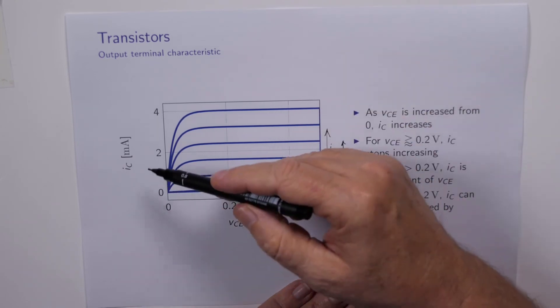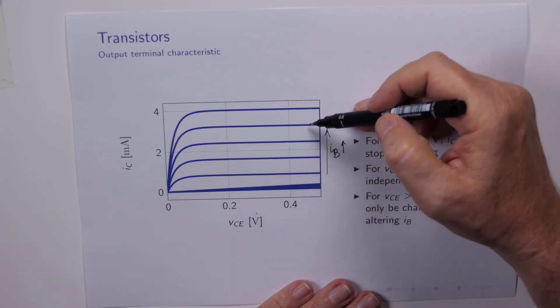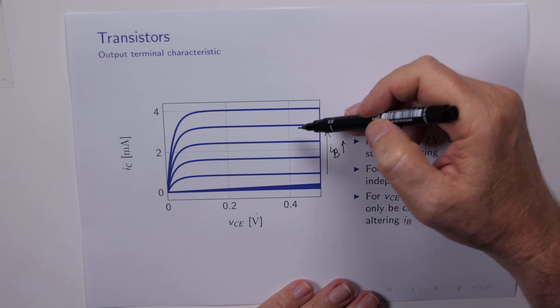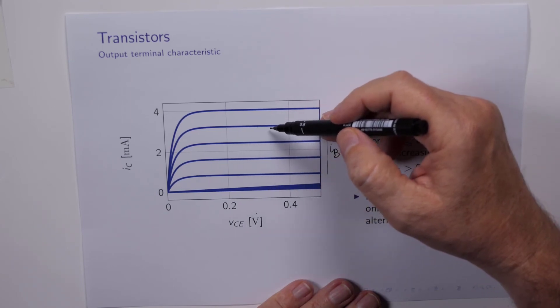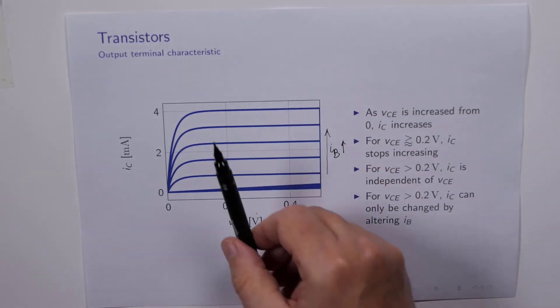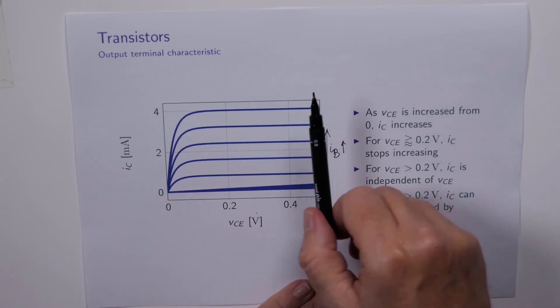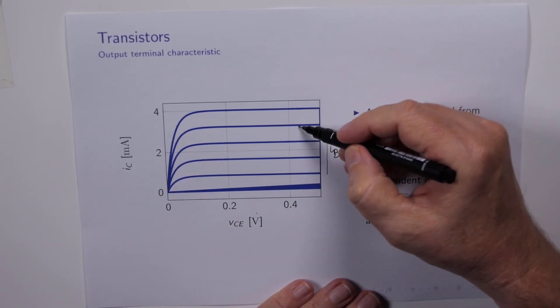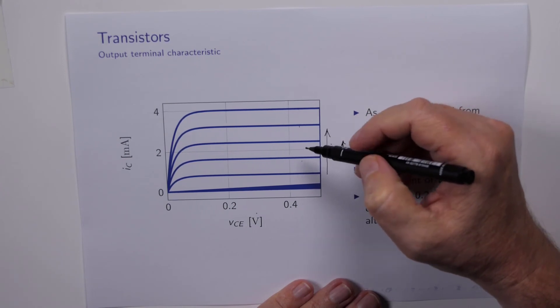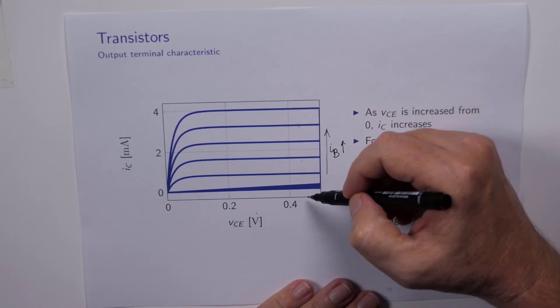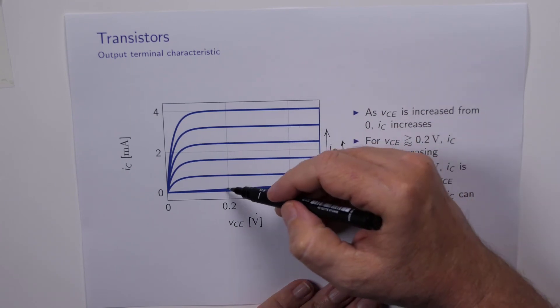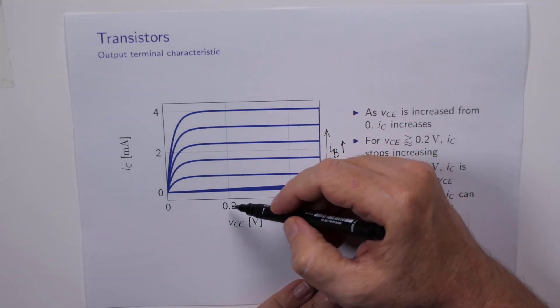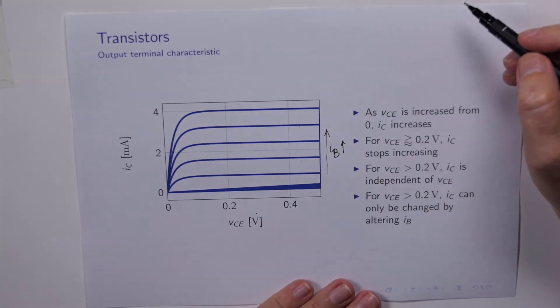So this is very important: IC is independent of VCE. And in fact, the only way to change IC when we're above about VCE equals 0.2 of a volt is to change IB, which will allow us to switch between these curves. We cannot change the collector current by changing the collector voltage when we're operating at a VCE greater than about 0.2 of a volt.